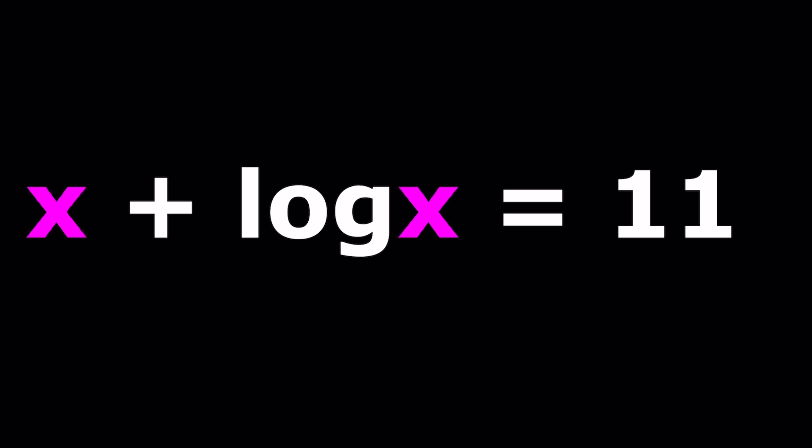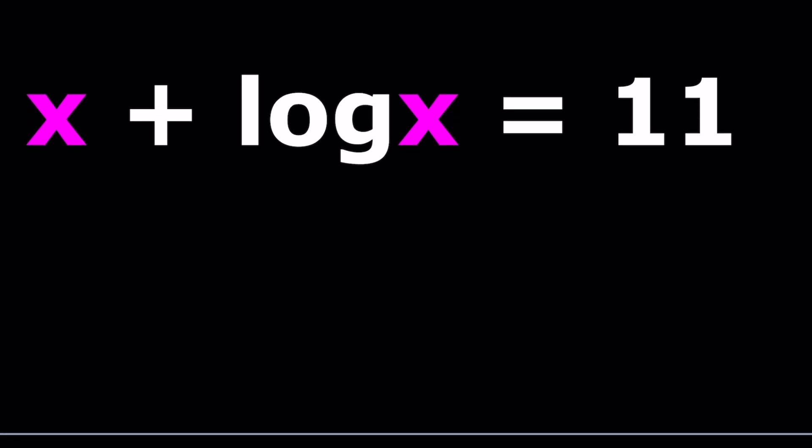So to be able to solve this problem, I kind of want to get rid of the log. And obviously, we can solve this problem in more than one way. I want to do 10 to the power on both sides. So in other words, if x plus log x is equal to 11, then 10 to the power that is going to equal 10 to the power 11. Would you agree? I hope you do.